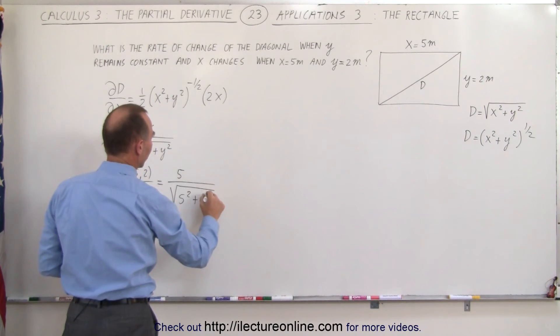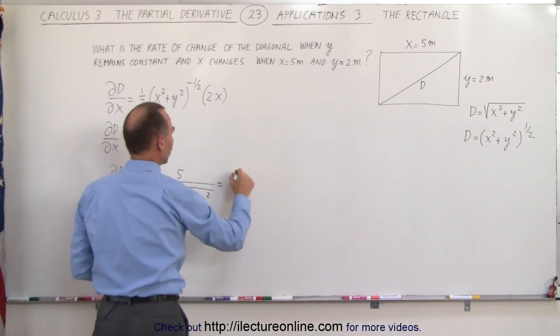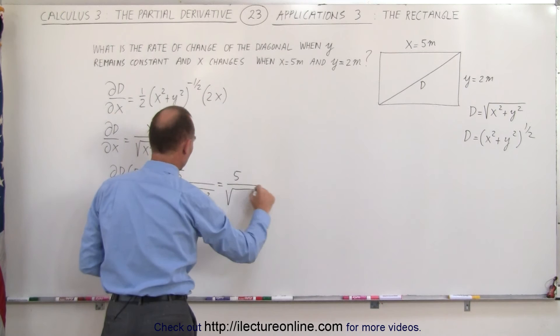I'm getting ahead of myself, 2 squared. That's equal to 5 divided by the square root of 25 plus 4,